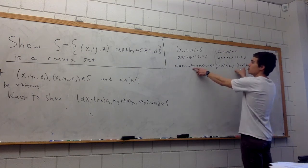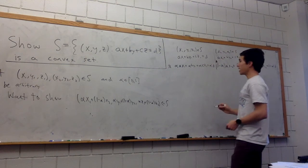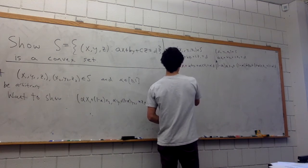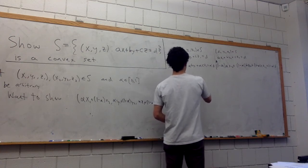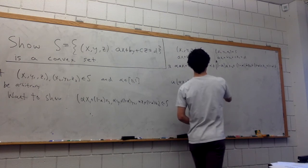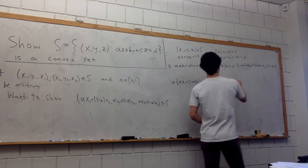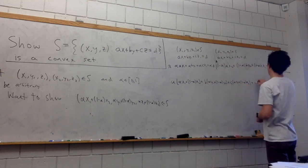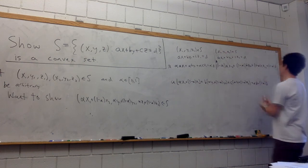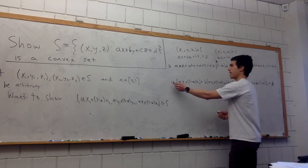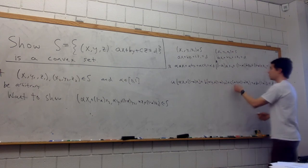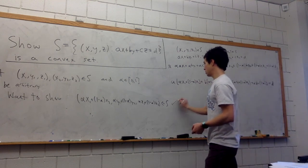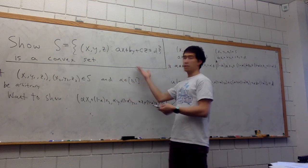Now I'm going to add these two equations together. We get: a*(alpha*x1 + (1-alpha)*x2) + b*(alpha*y1 + (1-alpha)*y2) + c*(alpha*z1 + (1-alpha)*z2) = alpha*d + (1-alpha)*d = d. So a times the x-coordinate plus b times the y-coordinate plus c times the z-coordinate equals d, which means this triple is in the set S. Since these two points and alpha were arbitrary, this means that S is a convex set.